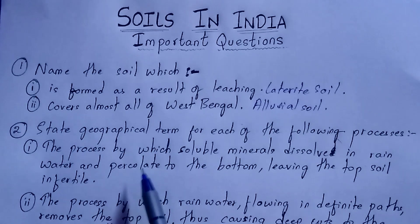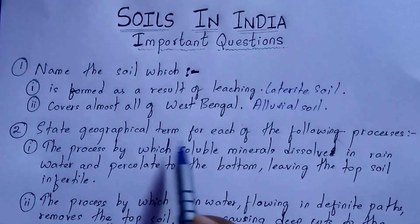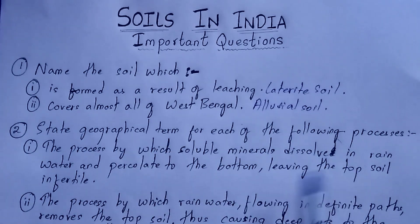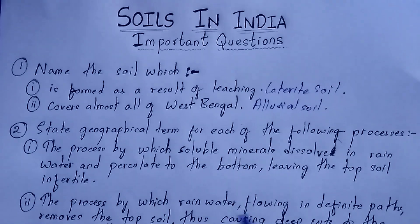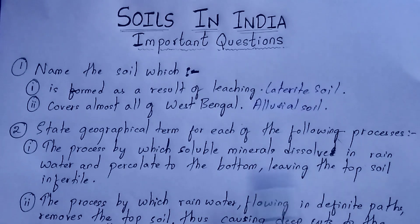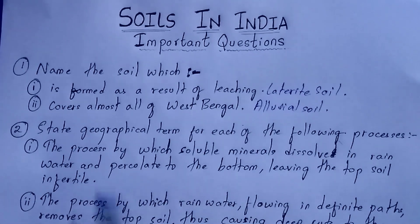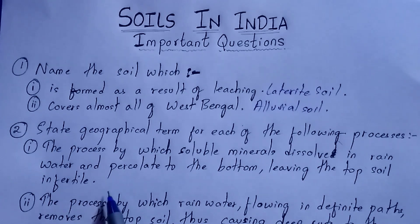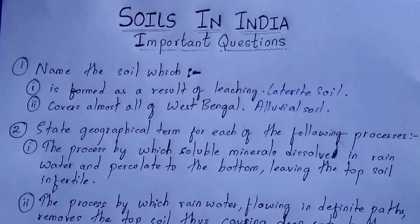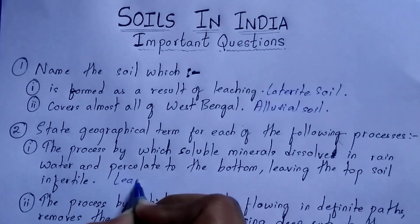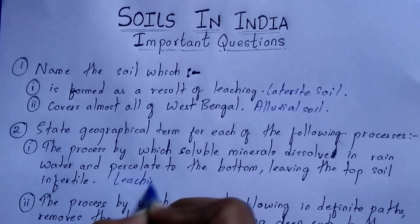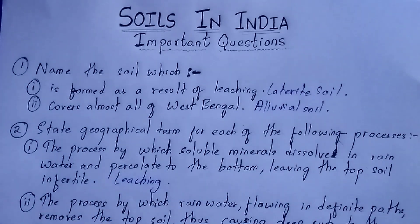Question number two: state the geographical term for each of the following processes. The first process is the one by which soluble minerals dissolve in rain water and percolate to the bottom, leaving the top soil infertile. The term for this process is leaching. Leaching is the process of washing down of soluble soil minerals, leaving the top soil infertile.